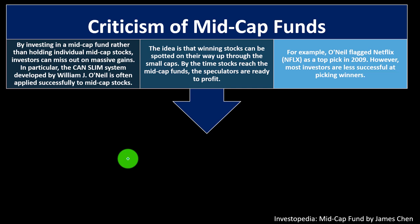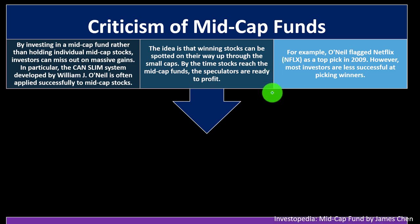For example, O'Neill flagged Netflix as a top pick in 2009. However, most investors are less successful at picking winners. When people try to promote their track record, they only promote the good things they did, and without a lot of data points it's really hard to determine if someone's track record is genuinely good over the long run. It's kind of like looking at someone's social media profile — that person looks wonderful, the best person in the world, because they only report the good stuff.